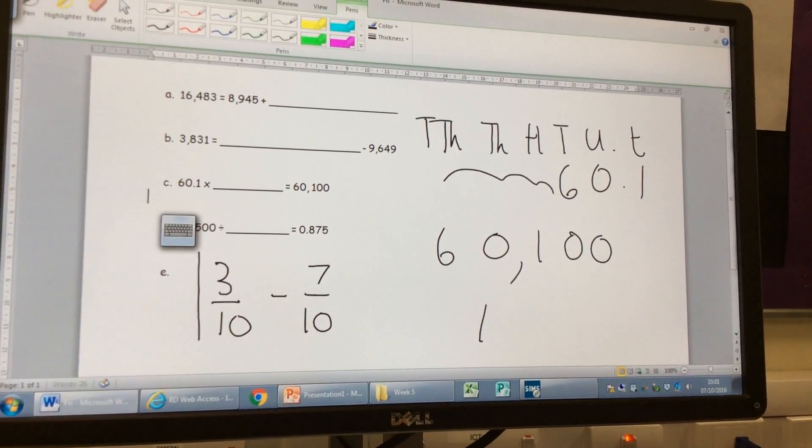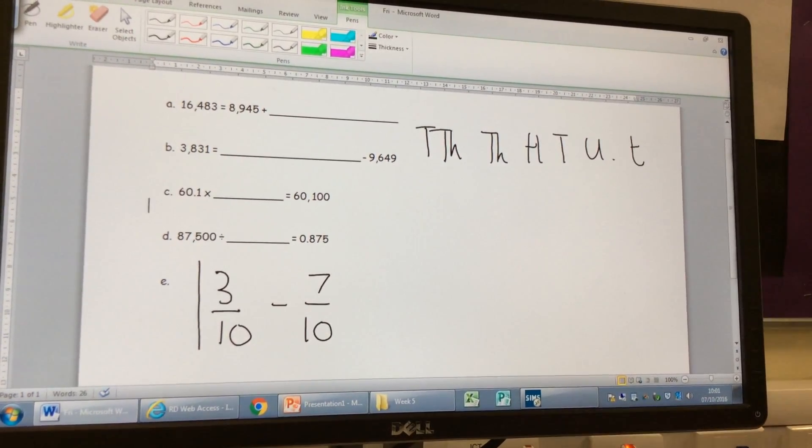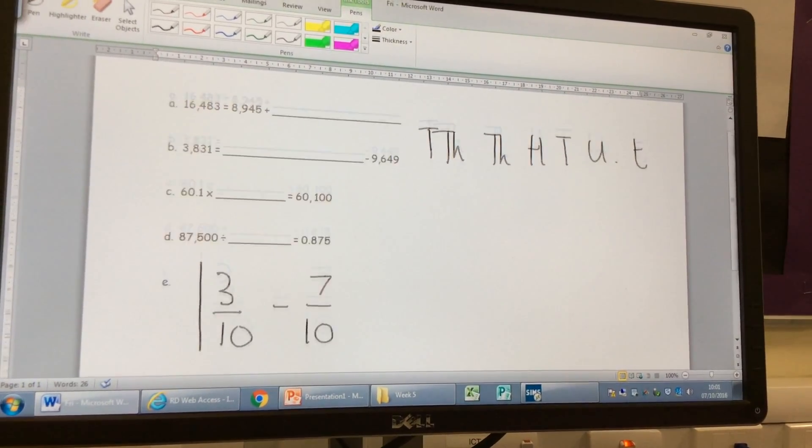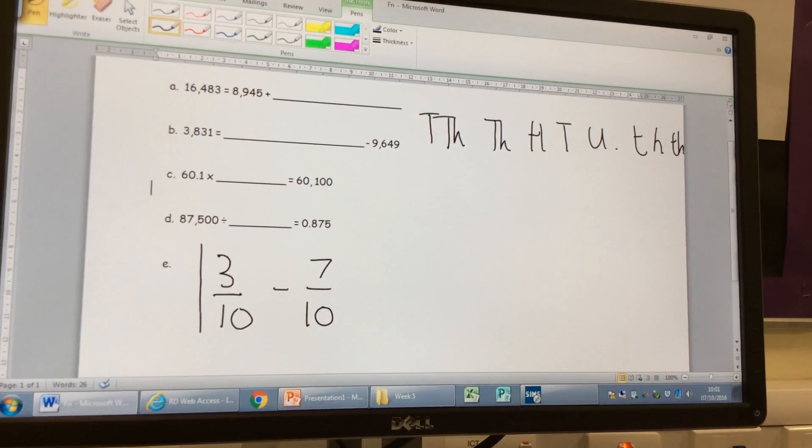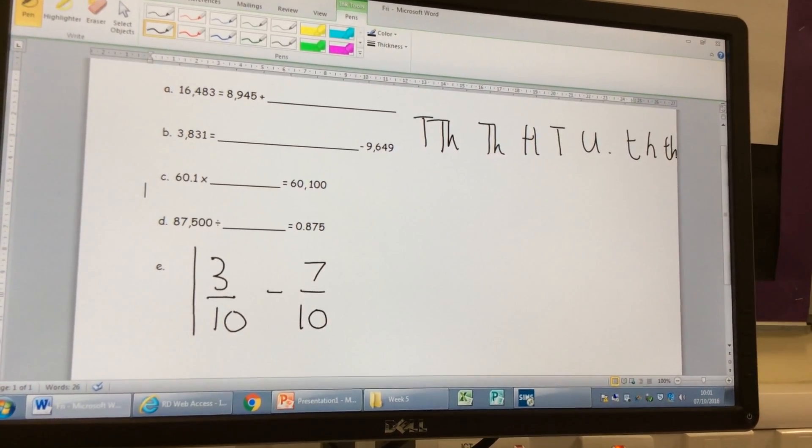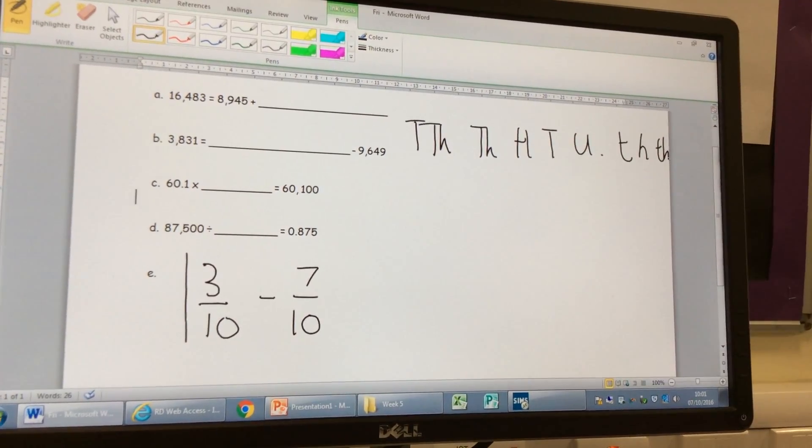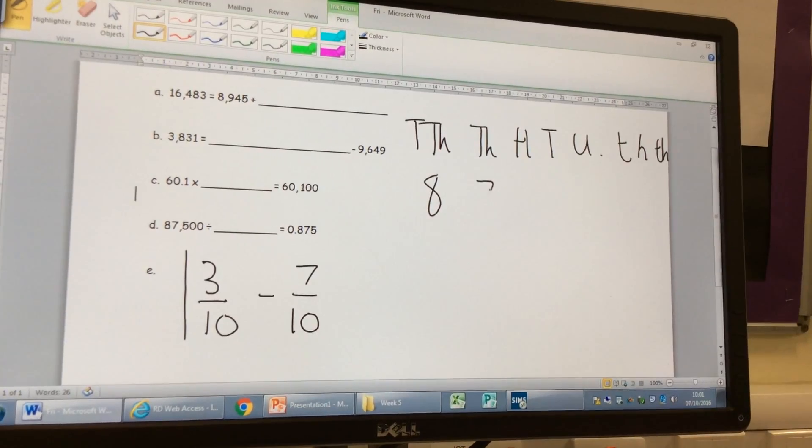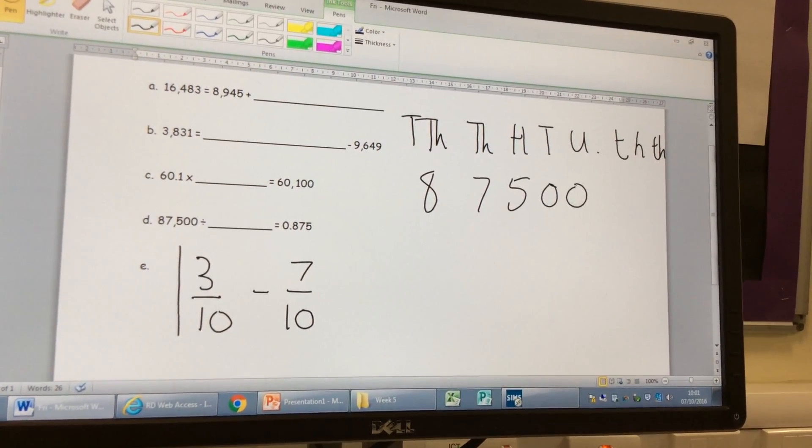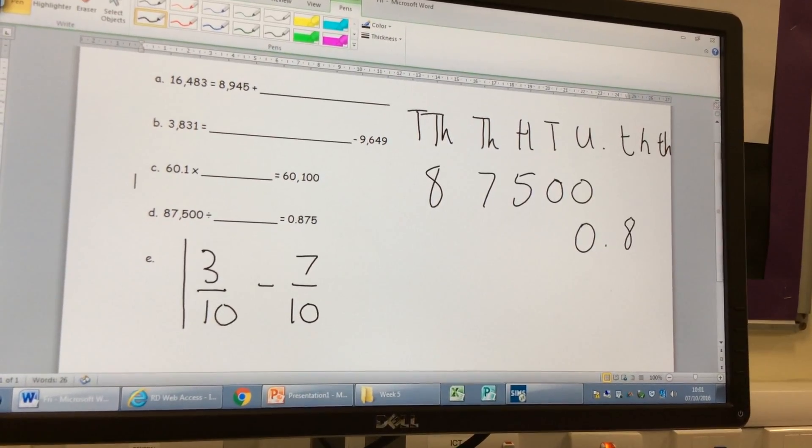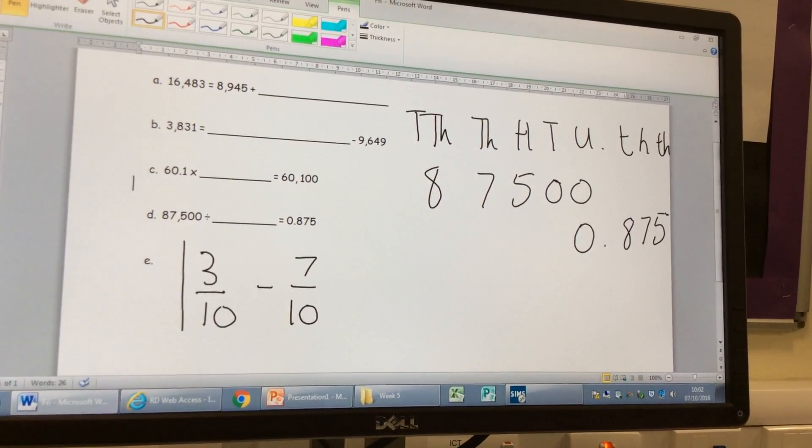Right, what about the next one then? 87,500 divided by something equals 0.875. Okay, who can tell me what to do here? What am I going to do first? Abby, what am I going to do first? You're going to write 87,500. Okay, so I'll put that one in. What am I going to put in next? You're going to put in your 0.875. Then what do I do, Abby? And then you just count the columns. How many columns have moved down? So let's have a look. How many columns has this eight moved down? We've got one, two, three, four,